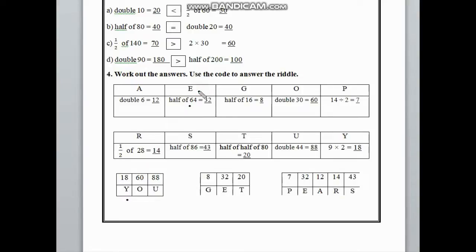The code of 32 is E. Half of 60. Half of 60 is 16, and half of 16 is 8. The code of 8 is G.